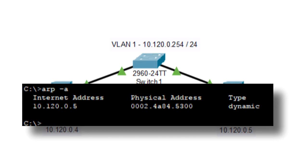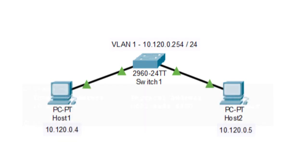Let's look at the switch and see what happens through this whole process. First, we send that ping. Initially, host 1 does not have an ARP entry — we saw the ARP entry, but that was after the whole process happened. So host 1 is going to send out an ARP message out its Ethernet interface up to switch 1, asking in that ARP message: who has 10.120.0.5, which we know is host 2. But the switch doesn't know that yet — both devices have just connected and nothing has been sent across yet.